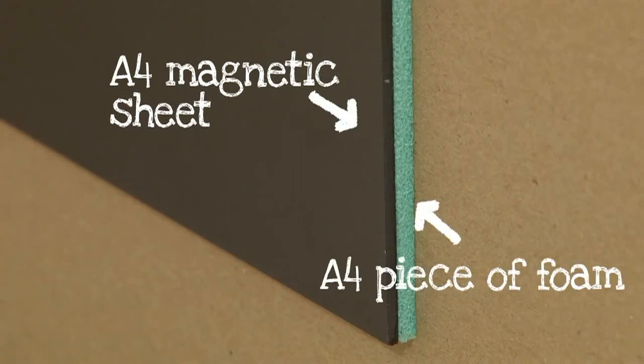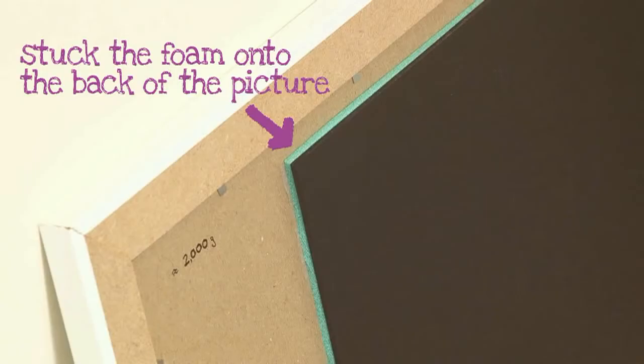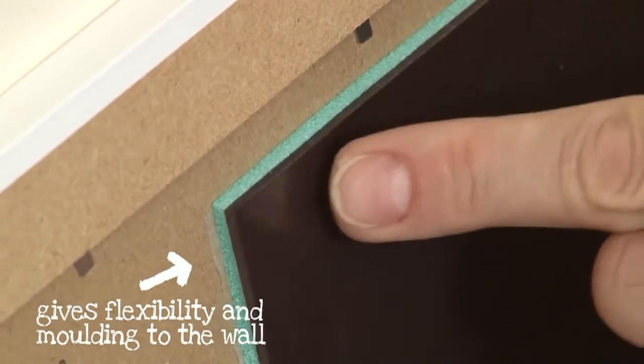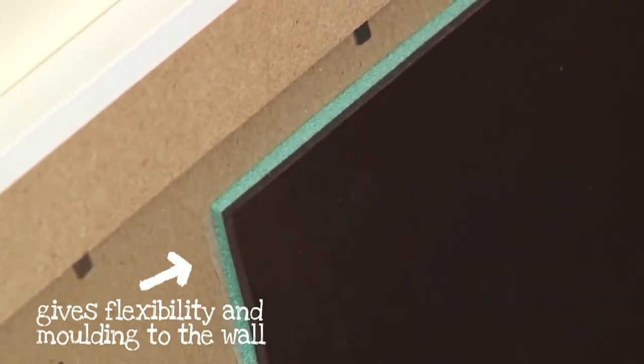We tackled this by getting an A4 magnetic sheet and an A4 piece of foam. We stuck the foam onto the back of the picture, and then stuck the magnetic sheet onto the foam. Now, this foam we thought would help give flexibility and help mold the frame to the wall, ensuring the magnet stands proud of the frame. And voila, it stayed on the wall. Great stuff.